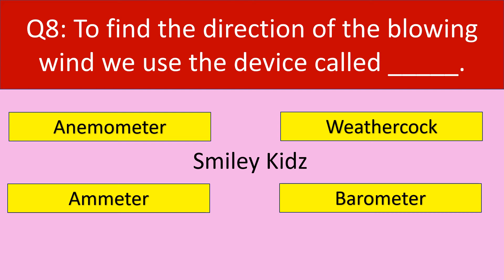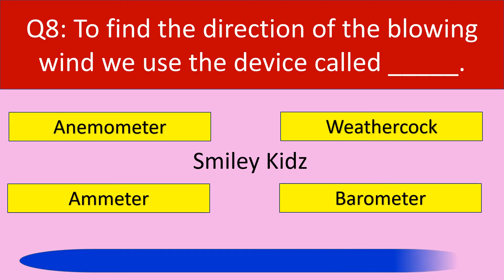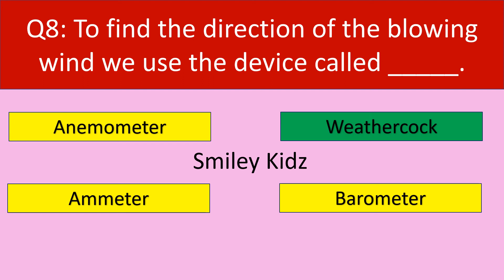Moving to question number 8. To find the direction of the blowing wind, we use the device called — your options are anemometer, weather cock, emitter, barometer. The correct answer is weather cock. To find the direction of the blowing wind, we use the device called weather cock.